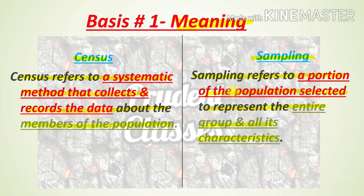So sampling is basically a portion of the population which is selected to show the characteristics of the population. I am sure that Basis 1 — the meaning of census and sampling — is now clear to you. Now let's talk about Basis number 2.